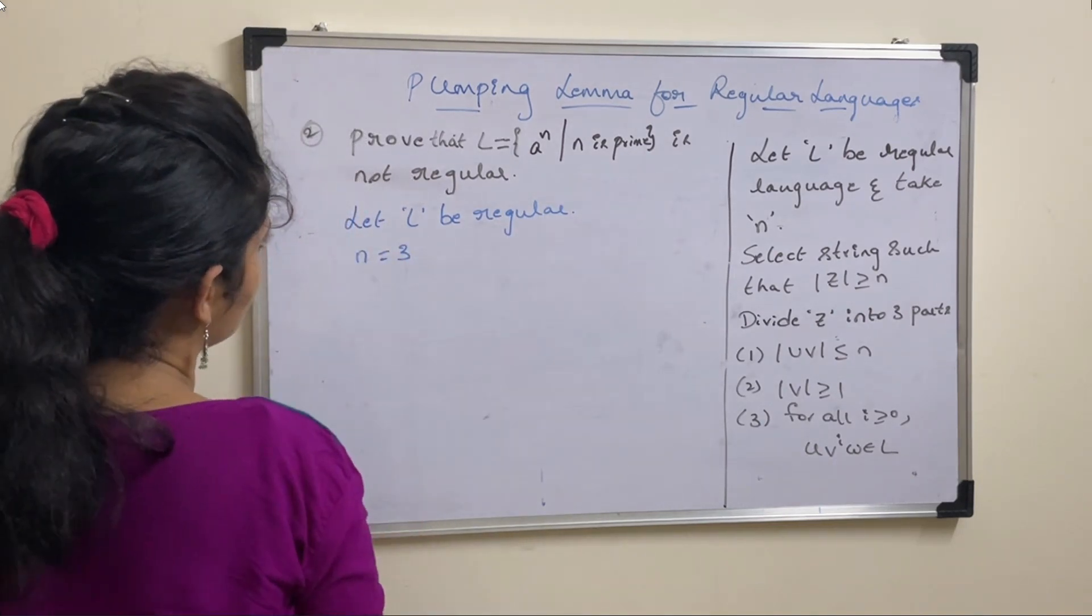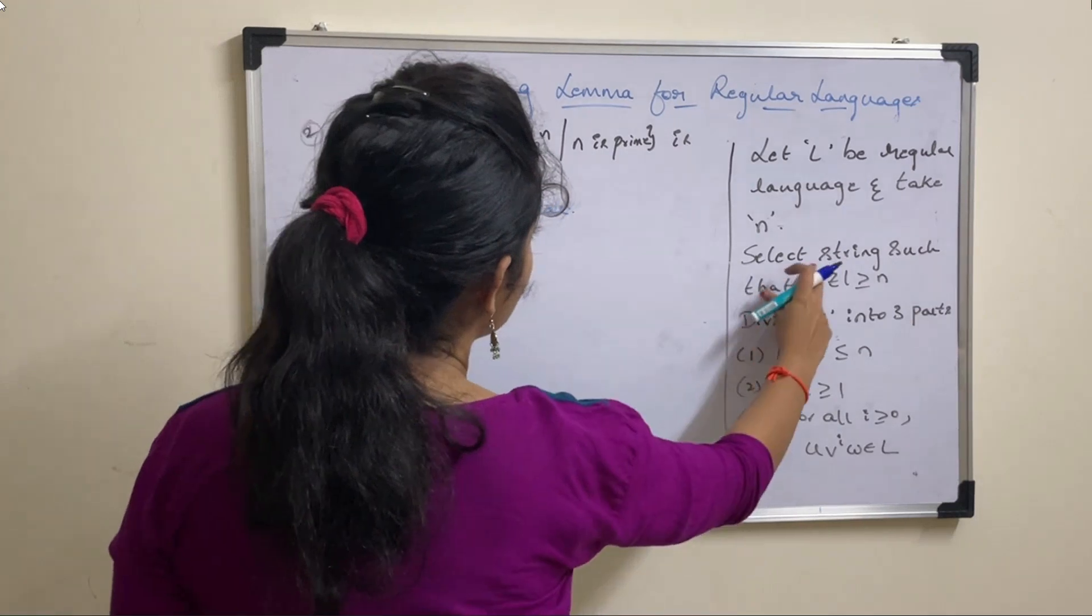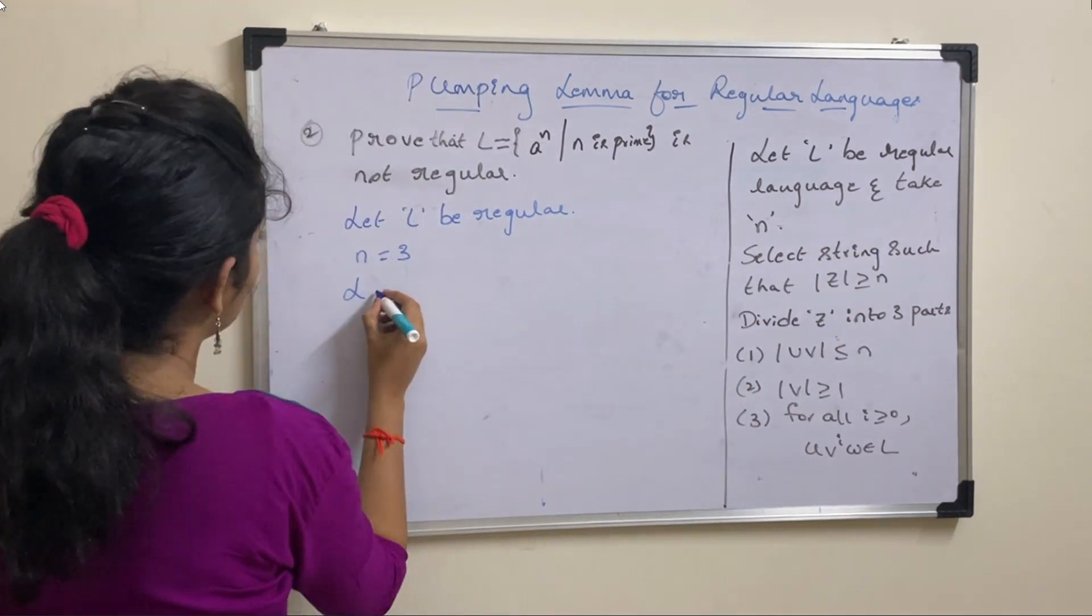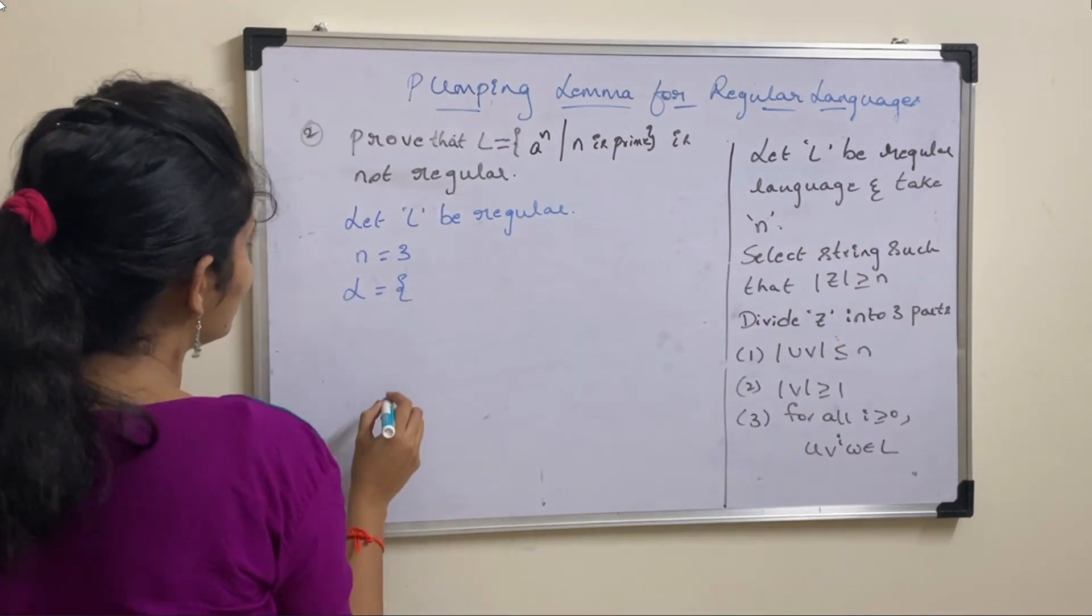Let N value be 3. After this you need to select a string. For that you need to derive the language or strings.